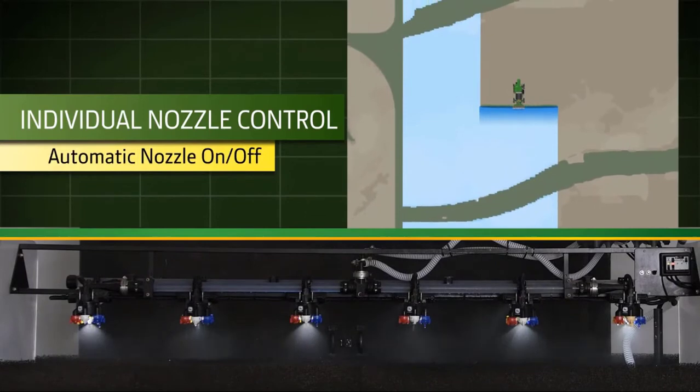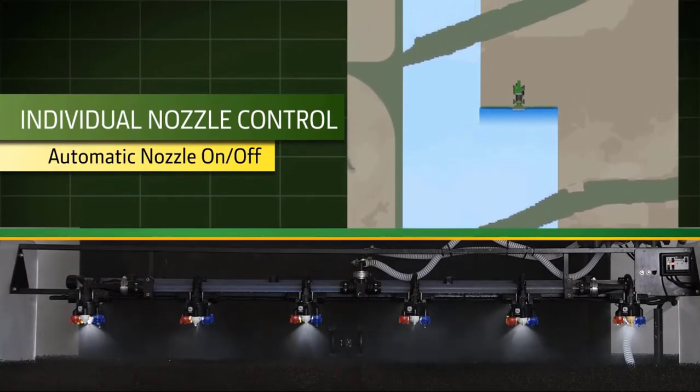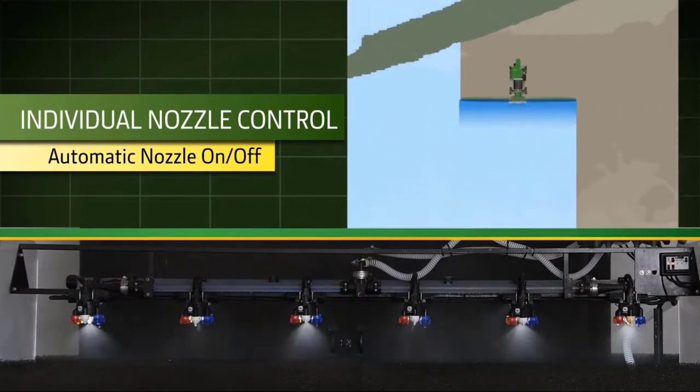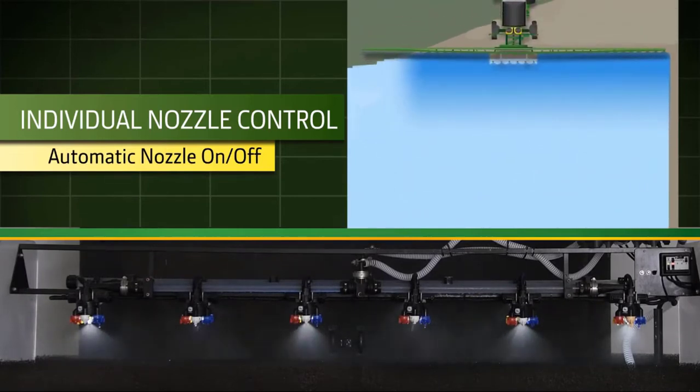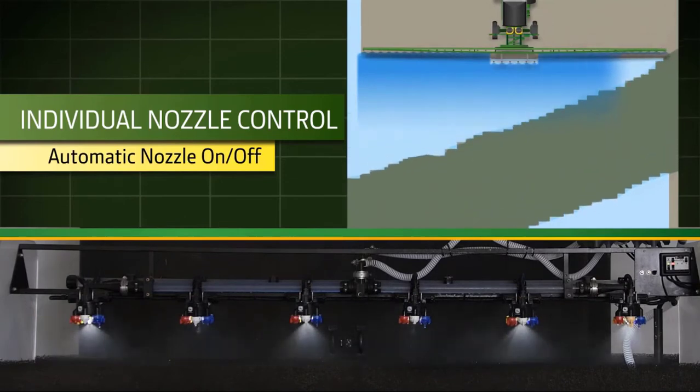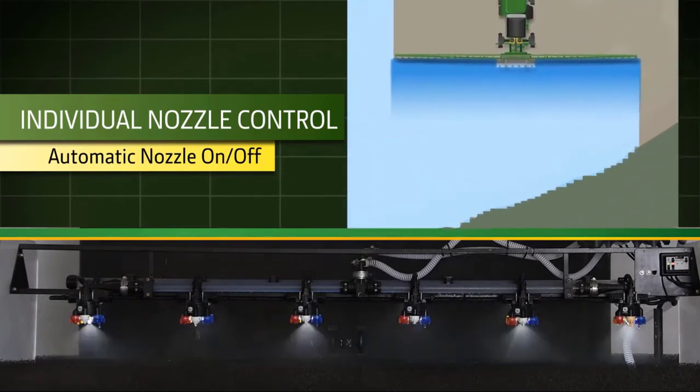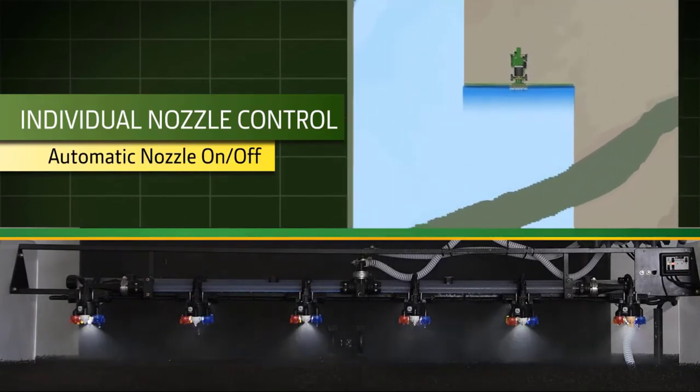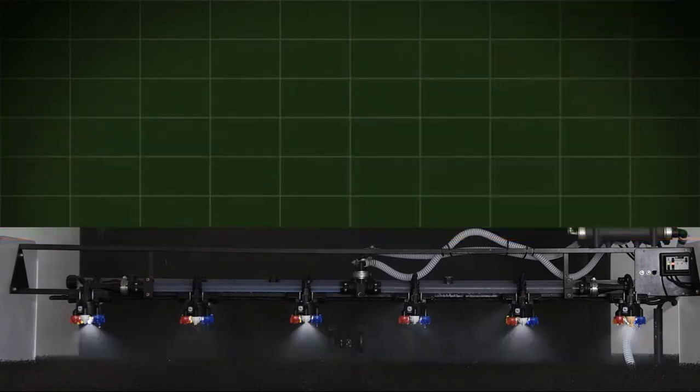This next example is talking through the individual nozzle control. Going from being able to control a section, which is around 11 feet in width, to individual nozzle spacing of 15 or 20 inches. As you saw, as we approached that waterway, each individual nozzle turned off and then once we passed through it, they turned back on.